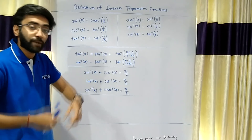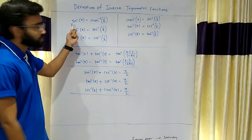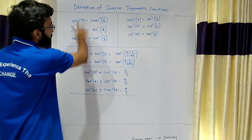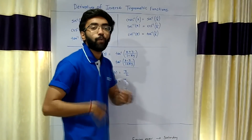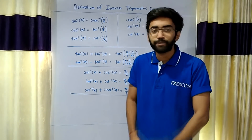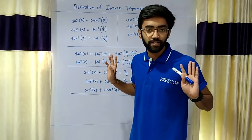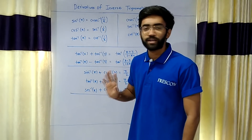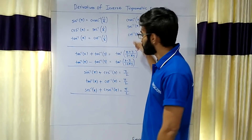We will solve the sums. Basically, sine inverse of x and cosec inverse of 1 by x — this is a relation. We will have inverse trigonometric functions in part 1, we will see the proofs and everything. Now our main target is to replace these terms and find out the derivative. This is the formula list.